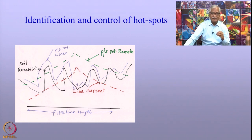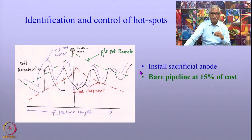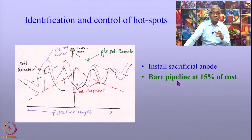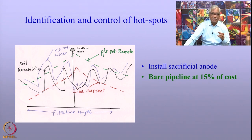The advantage of this technique is that since these structures are buried, all measurements are made above the ground. To control the corrosion at the hot spot, one way is to install a sacrificial anode at that location and make an electrical connection to the pipeline. With this, it is possible to protect the pipeline from severe corrosion by spending only about 15 percent of the overall cost of cathodic protection of the pipeline — that is the real advantage of using multiple surveys.